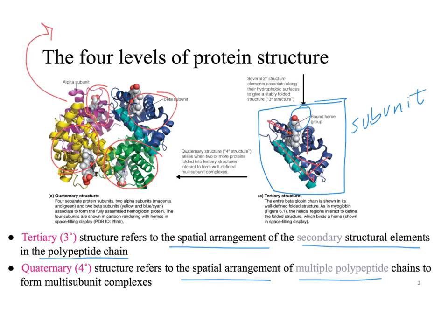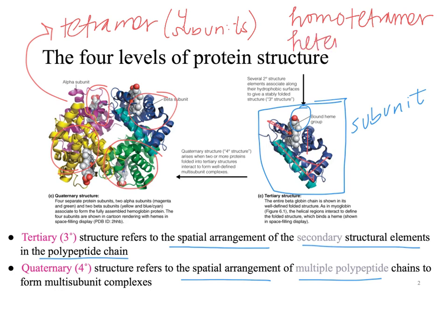We would call this a tetramer because it has four subunits. If all four subunits have the exact same primary sequence, we would call it a homo, meaning same, homo-tetramer. If the four subunits had different amino acid primary sequences, we would call it a hetero, meaning different, hetero-tetramer.